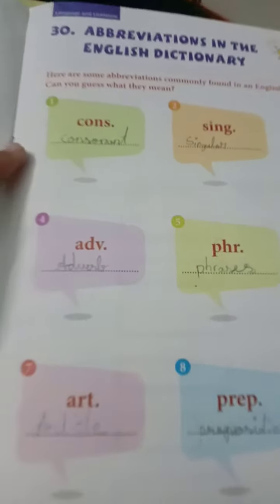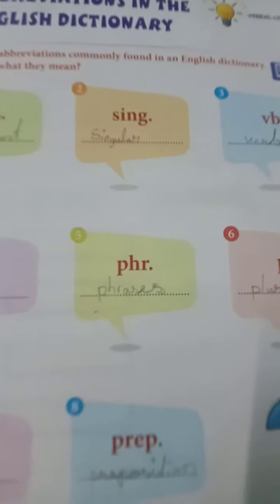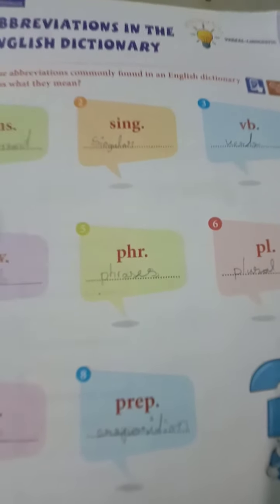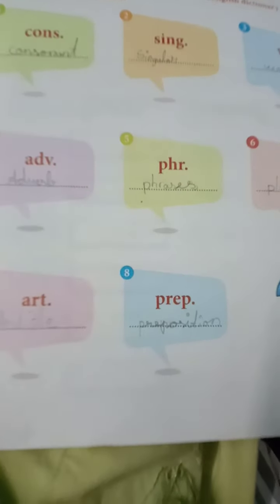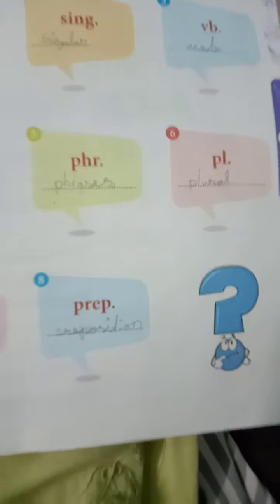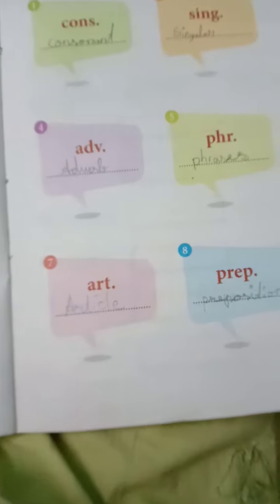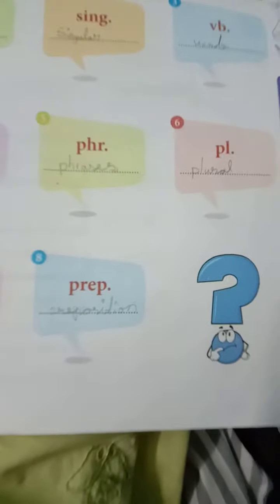First one: cons — Consonant. Second one: sing — Singular. VB — Verb. ADV — Adverb. PHR — Phrases. PL — Plural. ART — Article. PREP — Preposition.